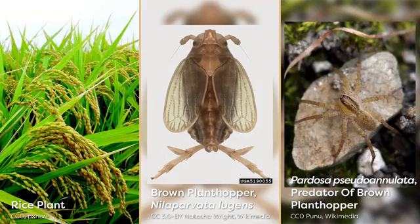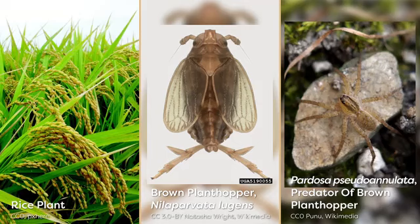Pest resurgence is something that has been observed in rice cultivation. Brown plant hoppers, which feed on rice plants, are common pests in tropical Asia. In the 1980s, large-scale outbreaks of this pest began to occur in rice plantations around the continent. The cause was found to be excessive insecticide use, which had killed off the natural enemies of the plant hoppers, such as spiders and ladybird beetles, allowing the pest populations to rebound to even more injurious levels.